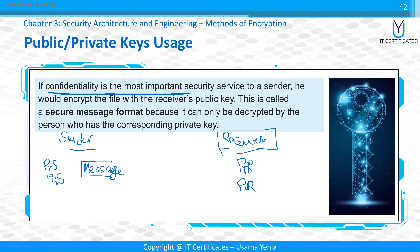The correct answer is: encrypt with public key of receiver, decrypt with private key of receiver. These must be a related pair - you cannot encrypt and decrypt with keys from different people. When using public/private, they must be from the same person. Any answer mixing sender and receiver keys will not work. The key rule: encrypt with one key, decrypt with the other - but they must be the matching pair.